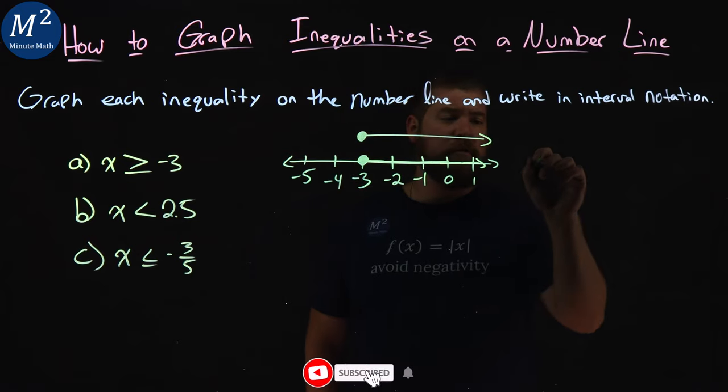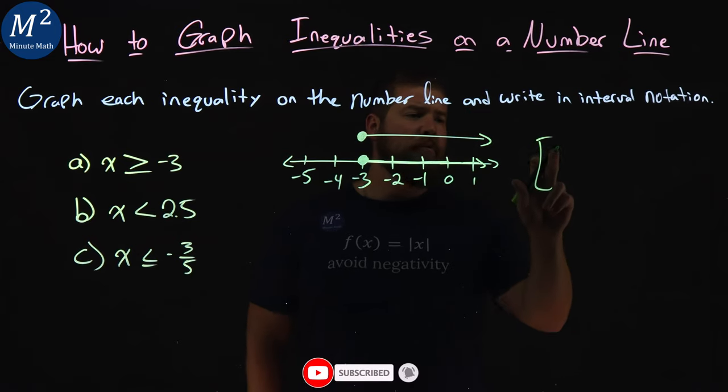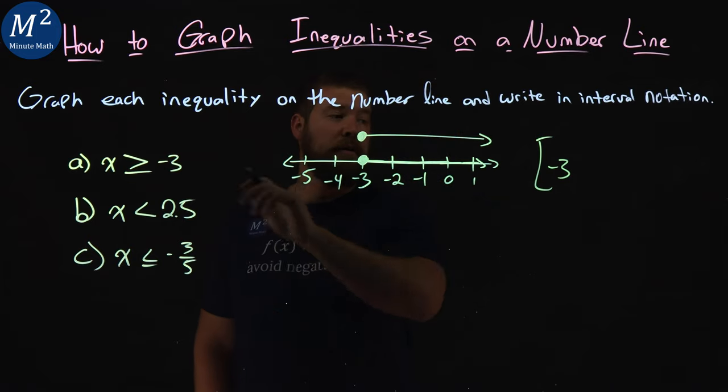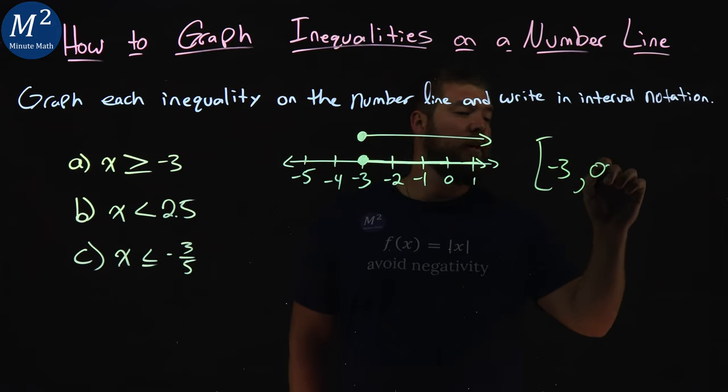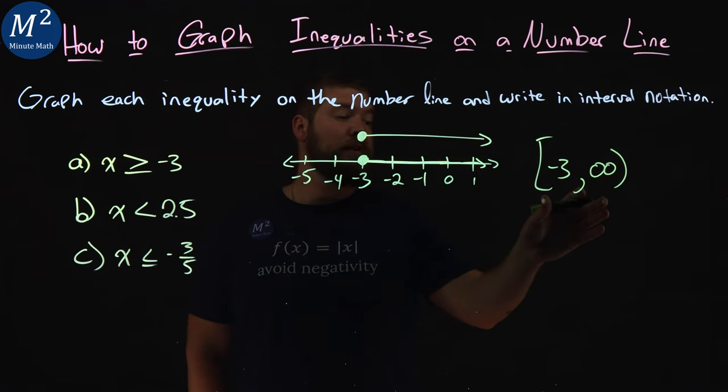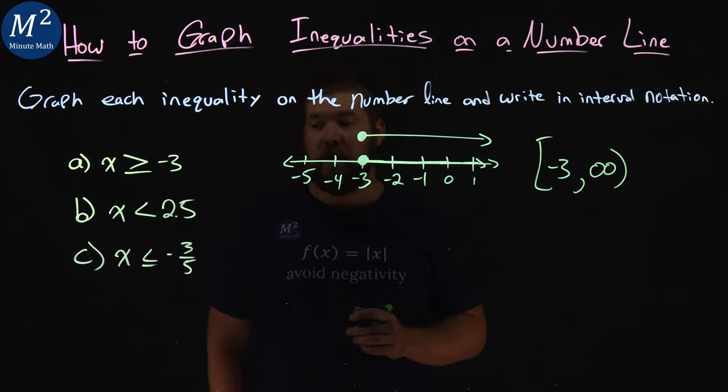Now we need to write this in interval notation. Bracket says we include negative three, the lowest bound here. Then we're going to infinity, and when we go to infinity, we put a parenthesis there. And so here we have the interval notation from negative three to positive infinity.